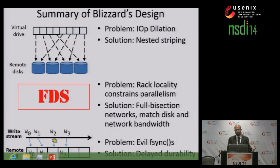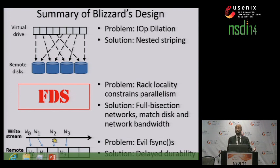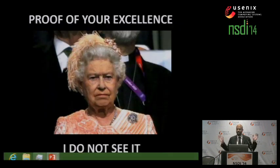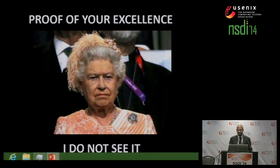In summary, I've shown three aspects of Blizzard's design. To solve the IOP dilation problem, Blizzard employs nested striping, which uses write-through IOs to the remote disks. To prevent rack locality from constraining IO parallelism, Blizzard uses an FDS-style hardware architecture that provides a locality-oblivious storage substrate. And finally, to eliminate write barriers induced by fsyncs, Blizzard uses delayed durability semantics to immediately acknowledge writes and flushes while still providing prefix consistency.